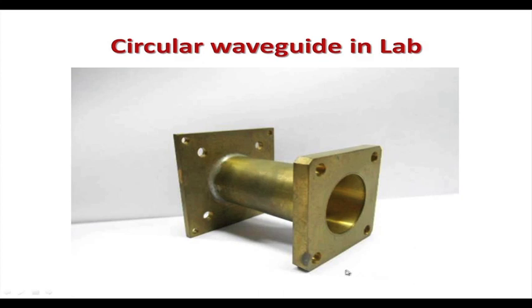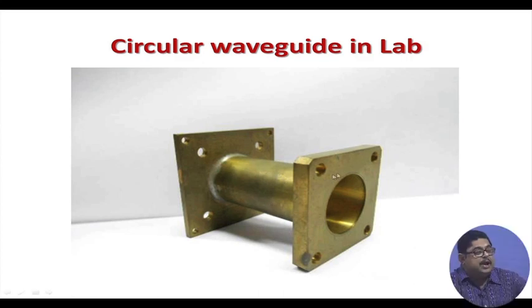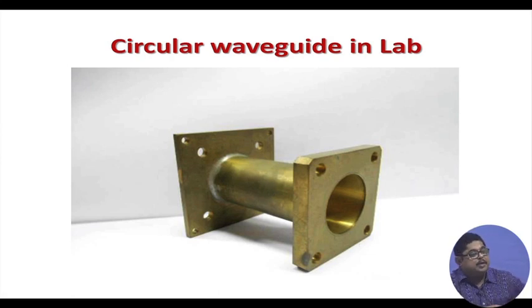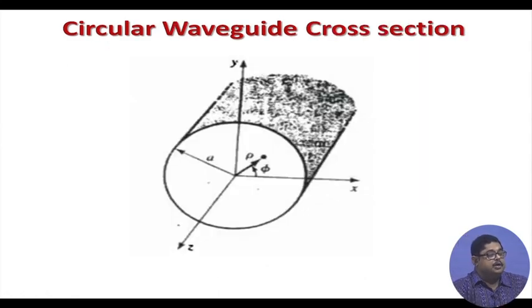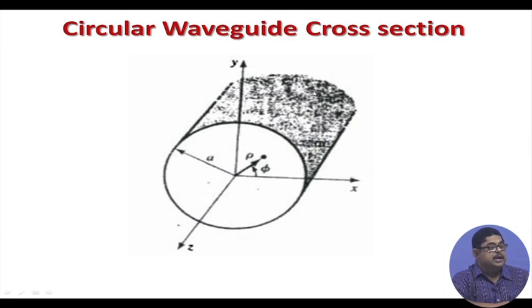In this lecture, we will see circular waveguide. This is the circular waveguide in our lab. You see that flanges are still rectangular, but the waveguide inside is a circular pipe instead of a rectangular one. This is the circular waveguide cross section — the wall is metallic, and since the structure is conformal with cylindrical coordinates,